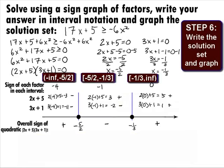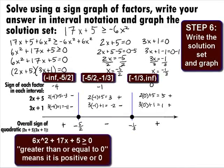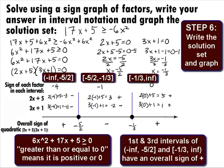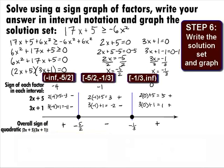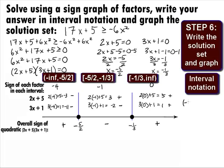In Step 6, we want to write the solution set in interval notation and graph it. Remember that the original inequality in standard form is 6x squared plus 17x plus 5 is greater than or equal to 0. To be greater than or equal to 0 means the quadratic has to be positive or equal to 0. Looking at the results, there are two intervals where the quadratic is positive: negative infinity to negative 5 halves, and negative 1 third to infinity. Since we are including the endpoints, this will be a closed interval. So our final answer in interval notation is negative infinity to the closed end of negative 5 halves, union with the closed end of negative 1 third to infinity.